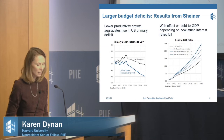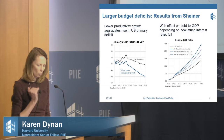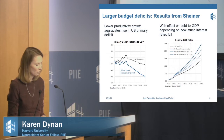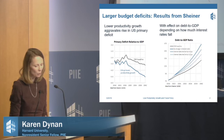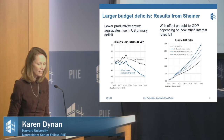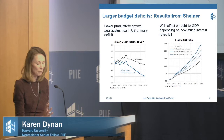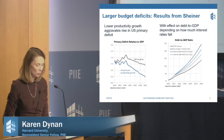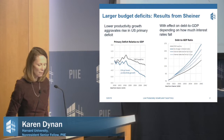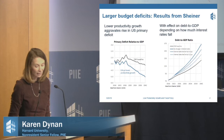Lower productivity growth makes the debt-to-GDP situation worse. Lower interest rates that should accompany lower productivity growth will help some. The next darkest blue line shows what you get when interest rates decline one-for-one by 0.6 percentage points. But even with a very aggressive decline in interest rates of 1.2 percentage points — a two-for-one — the debt-to-GDP ratio is still considerably worse than in the baseline when you have lower productivity growth.